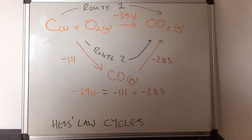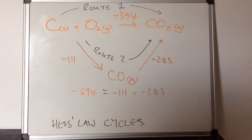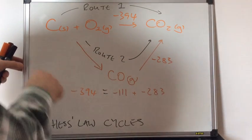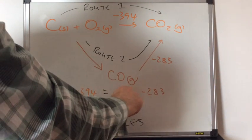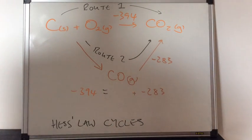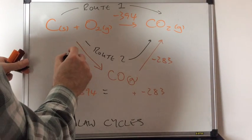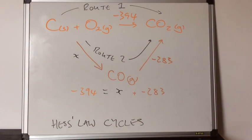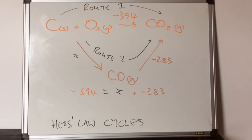What we're going to do now is use Hess's law cycles to calculate an unknown value in the cycle. Imagine we didn't know that the first brown step was minus 111 — we'll just call that x. If we know two of the values in the cycle and one is unknown, we can rearrange and solve for x.